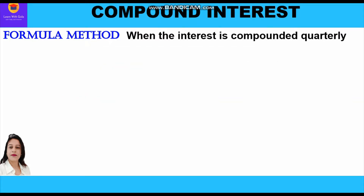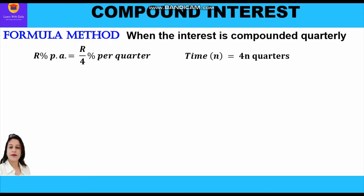When interest is compounded quarterly, the rate percent per annum becomes r/4 percent per quarter, and time n becomes 4n quarters. That means the rate will be divided by 4 for each quarter and the time period will be multiplied by 4 to get the number of quarters. In a year we have four quarters of three months each.